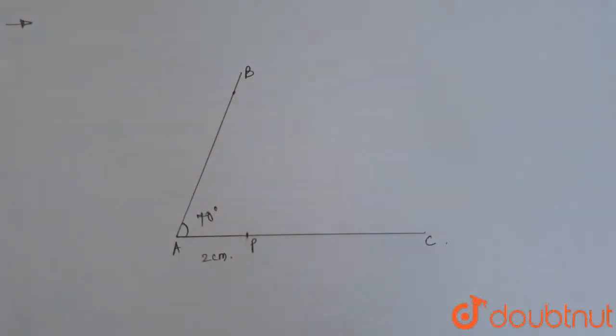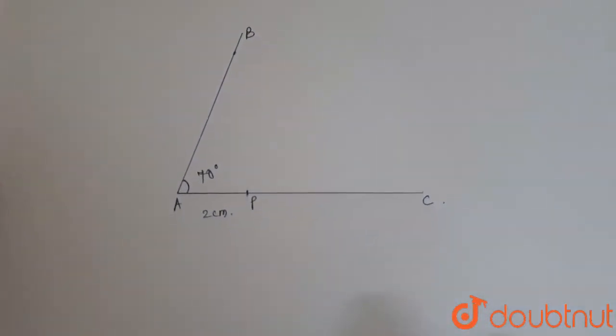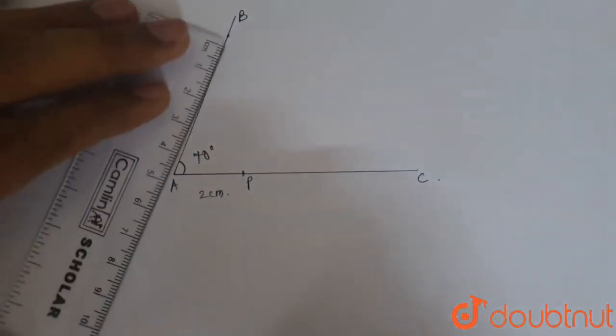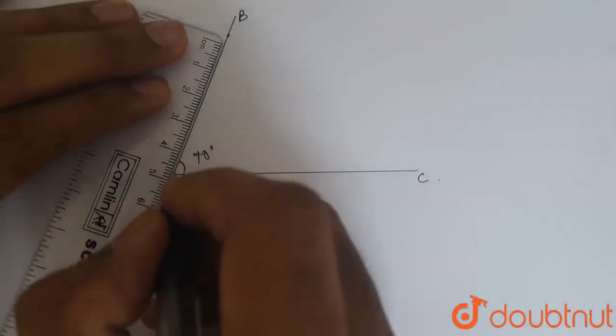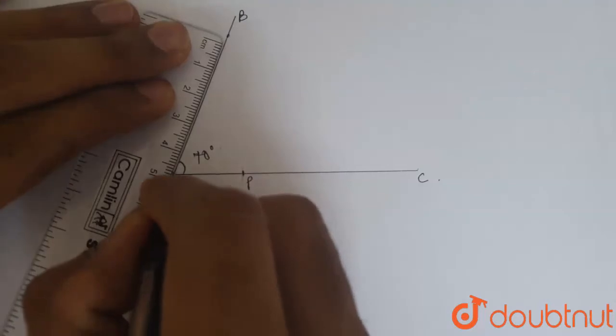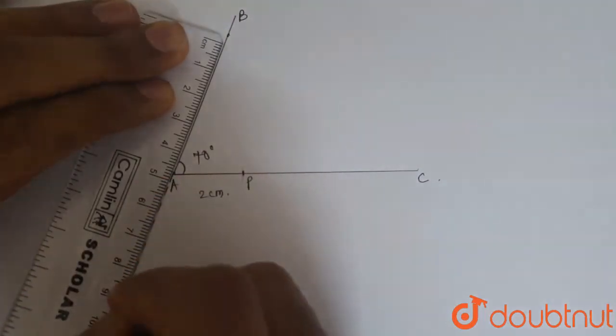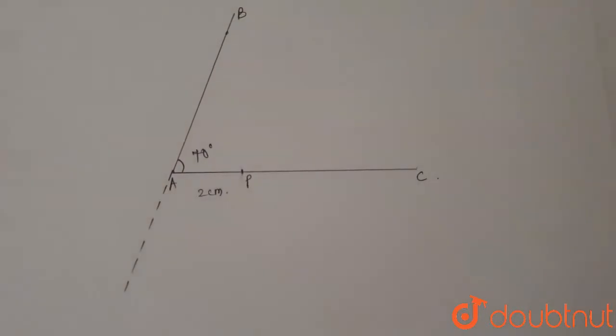So, as asked in the question, now we have to make a perpendicular line which is passing from P to side AB. So, for that, first, we will have to extend this side AB backwards. Like this.